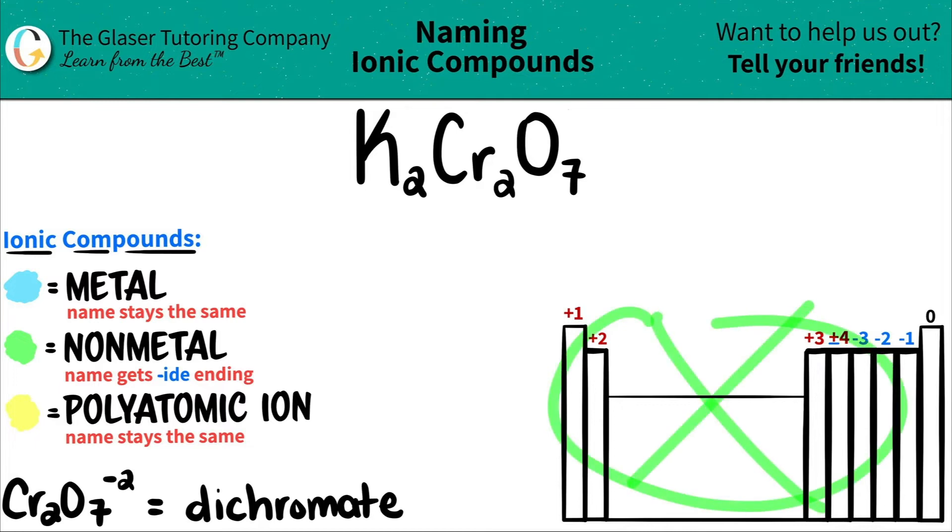But remember, polyatomic ions are never on the periodic table. They should be memorized. So I wrote down the one that we're going to be using here. So just flashcard this or write it down. Just memorize these because they will come back.